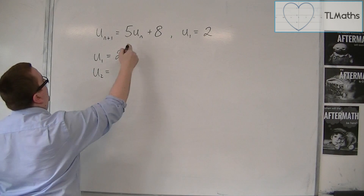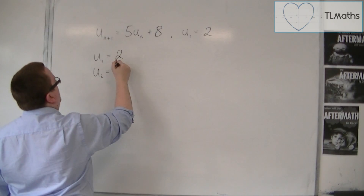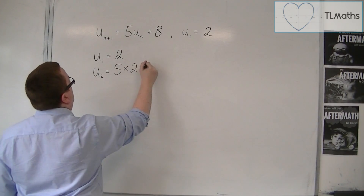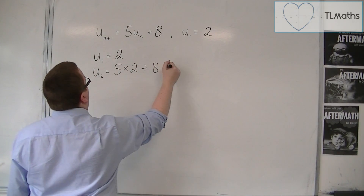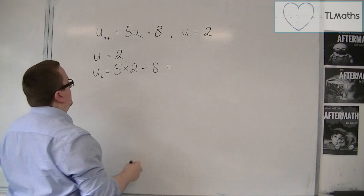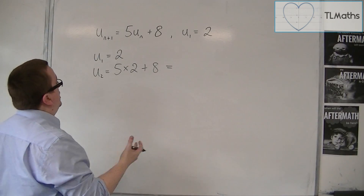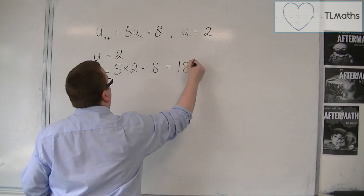So u2 is equal to 5 lots of the previous term plus 8. So we've got 5 times 2 plus 8, which is 18.